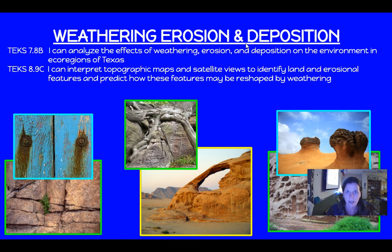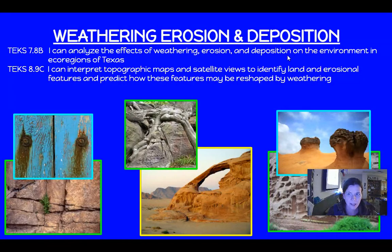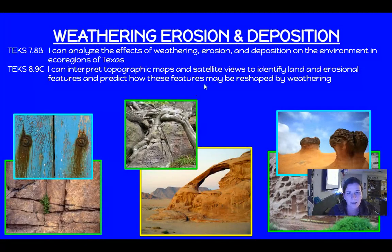Weathering, erosion, and deposition. Today we're going to focus on two TEKS: a 7th grade and an 8th grade TEKS. We can analyze the effects of weathering, erosion, and deposition on the environment in ecoregions of Texas. We can interpret topographic maps and satellite views to identify land and erosional features and predict how these features may be reshaped by weathering.